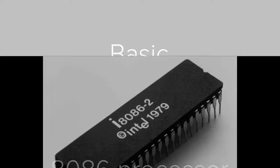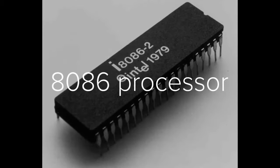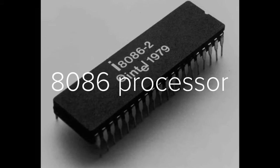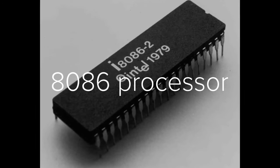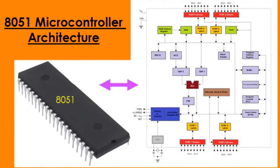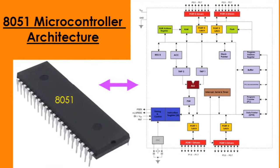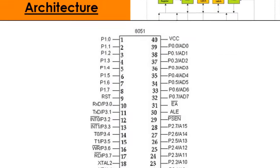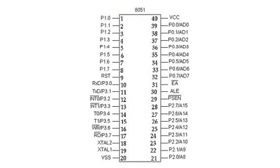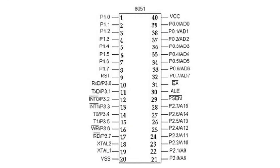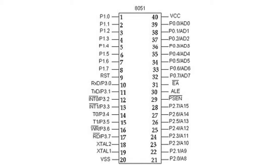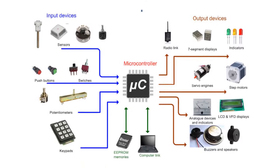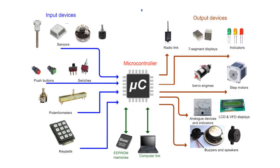The next lab is microprocessors and microcontrollers lab. The main objectives are to familiarize the architecture of the 8086 processor, assembly language programming and interfacing with various modules. Students can also understand 8051 microcontroller concepts, architecture, programming, and application of microcontrollers.